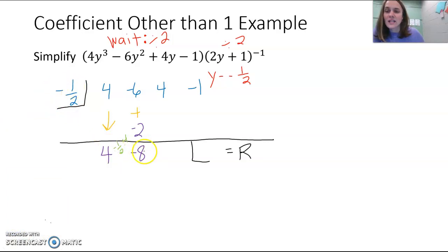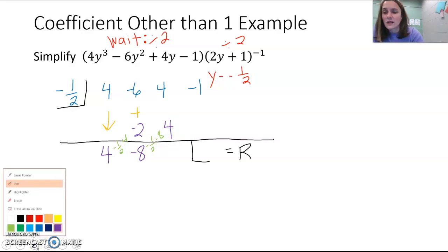And then we would repeat that process over again. So we're going to take negative 1 half times negative 8. And when we do that multiplication, negative times a negative makes a positive, and 1 half of 8 is 4. And again, we're going to add those together. 4 plus 4 would give us 8.